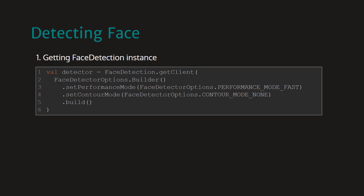To detect faces we need to create the face detection instance. We can do this by using FaceDetection.getClient() function. This getClient function takes FaceDetectionOptions as a parameter, and here we are using FaceDetectorOptions.Builder to create the face detector options.